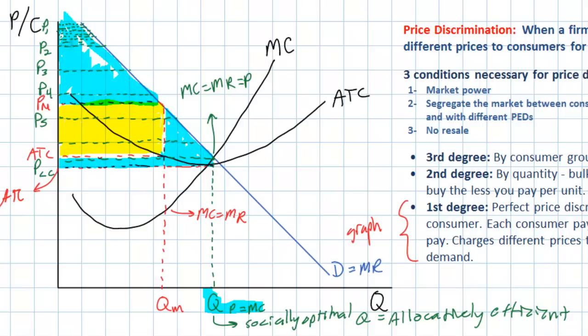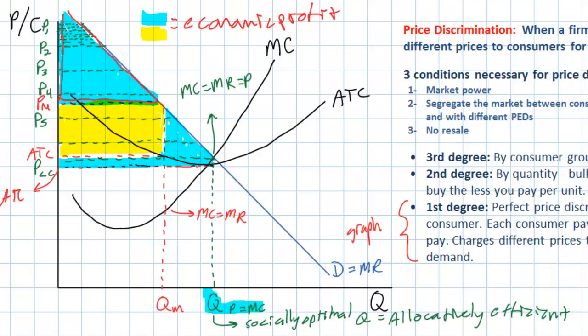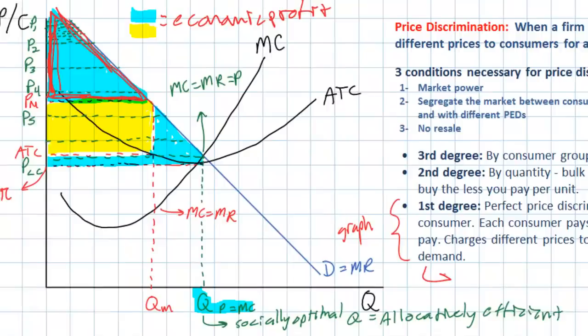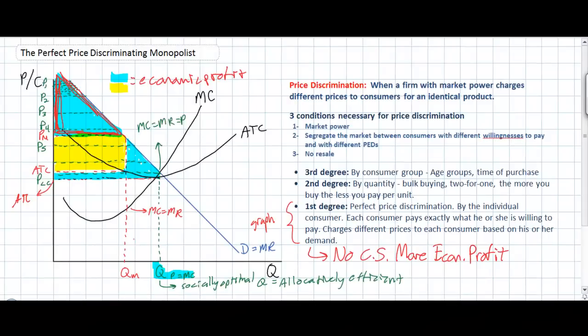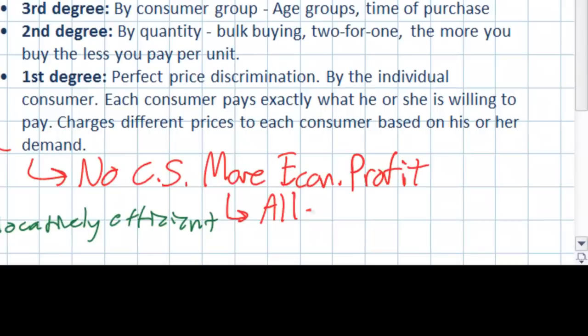So the outcome of perfect price discrimination: there is much more economic profit — the blue plus yellow areas. Consumer surplus is eliminated. Under a single-price monopoly, the red triangle above the price and below the demand curve represented consumer surplus; under perfect price discrimination, there is no consumer surplus. However, there is greater output, and because the monopolist continues selling up to where marginal revenue equals marginal cost — and MR now equals price — a perfectly price-discriminating firm is allocatively efficient.